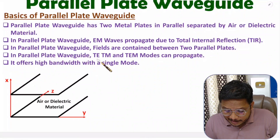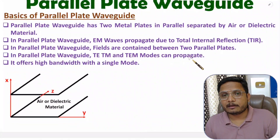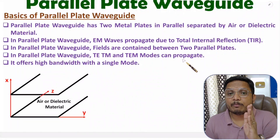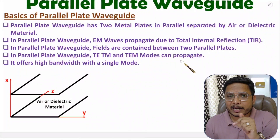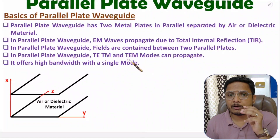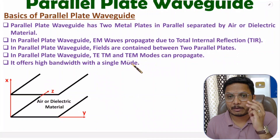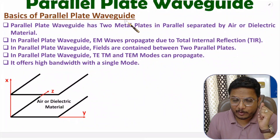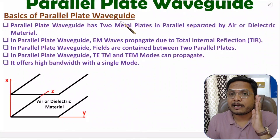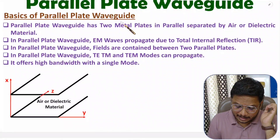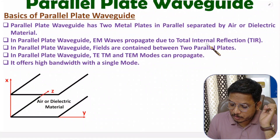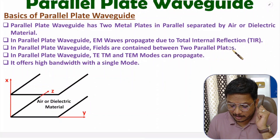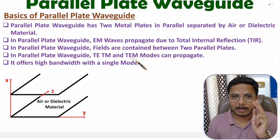In parallel plate waveguide, TE, TM and TEM modes can propagate. In rectangular waveguide, TEM mode is not possible. But in parallel plate waveguide, TE, TM and TEM — all three categories of modes are possible. It also offers high bandwidth with single mode.